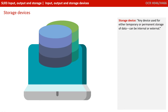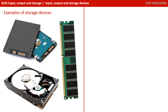A storage device is any device used for either temporary or permanent storage of data. These can be internal or external. Here on the left are three examples of internal storage: main memory, RAM, a solid state hard drive and a magnetic hard drive.